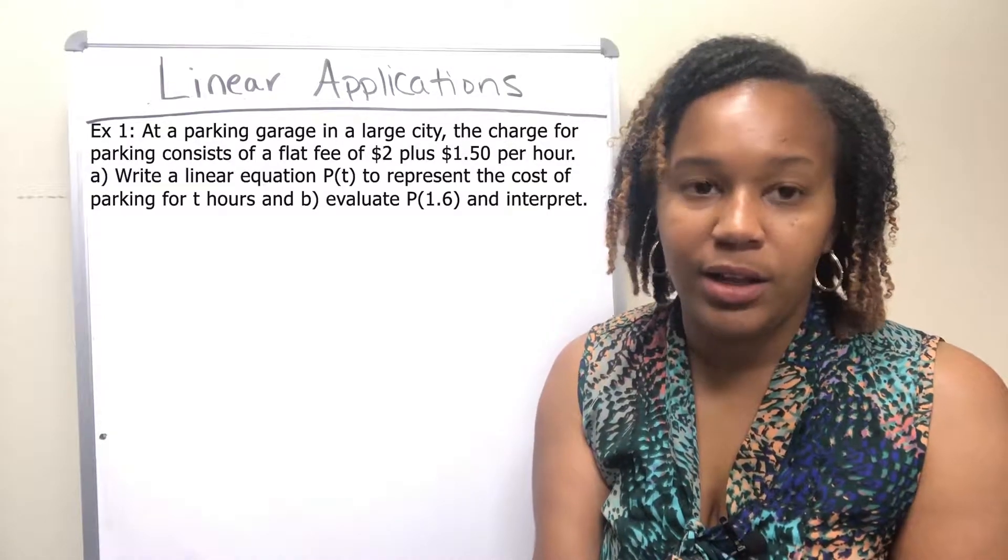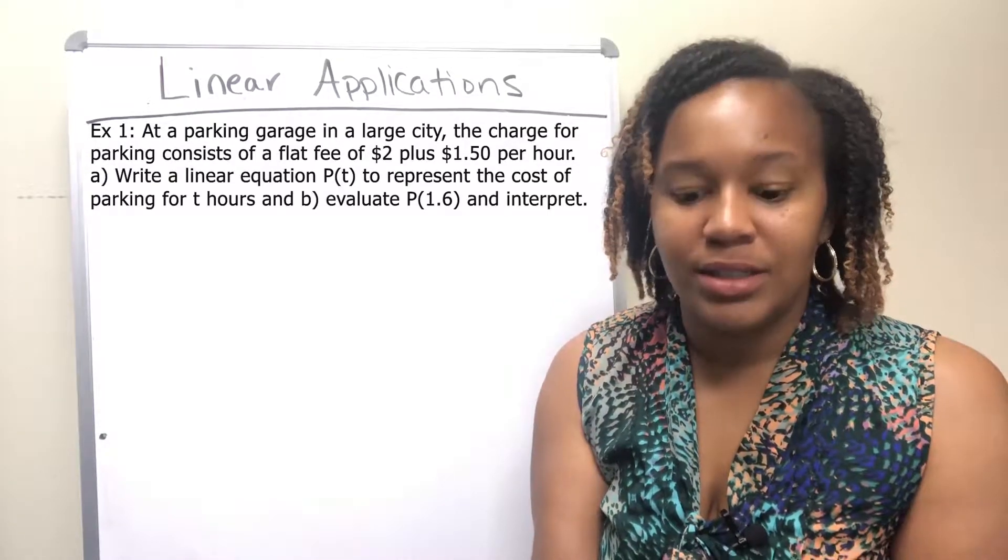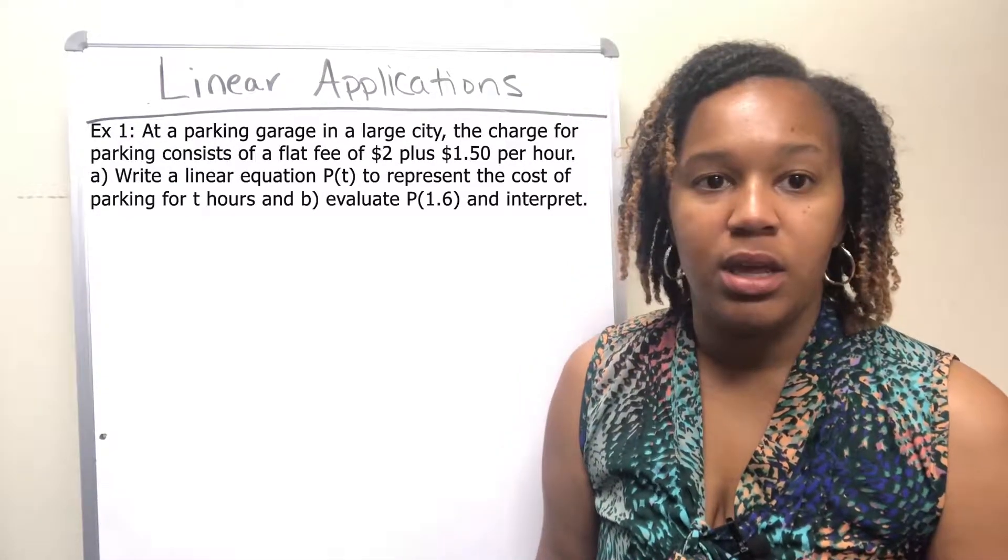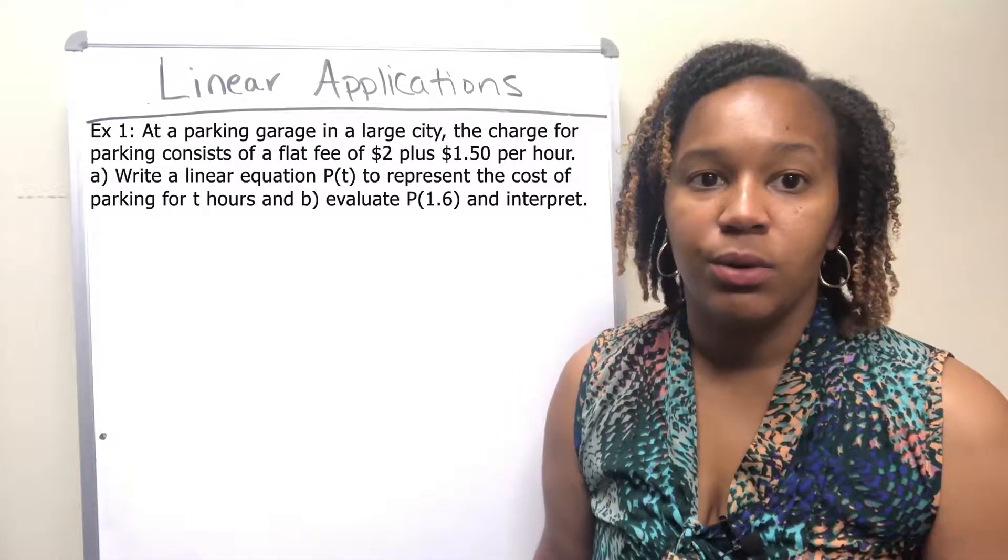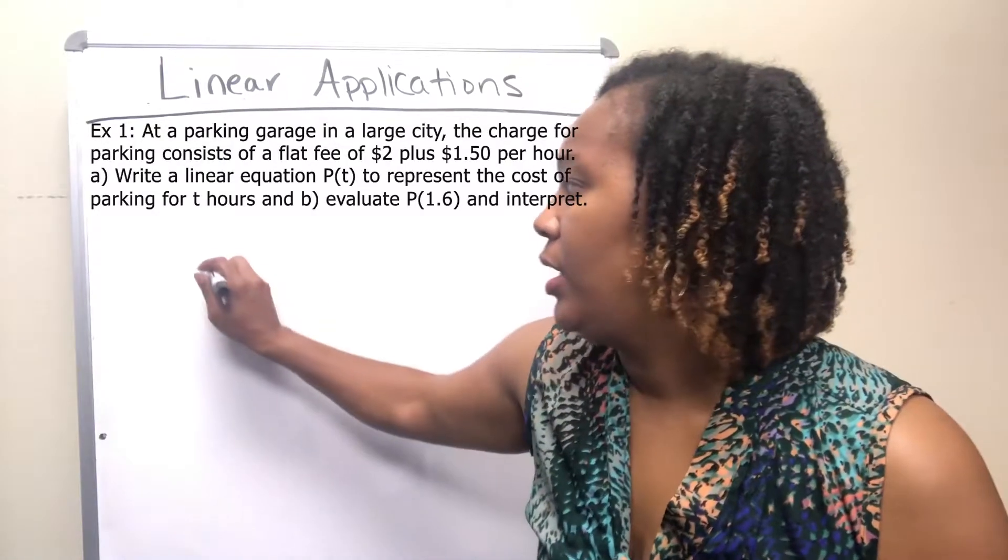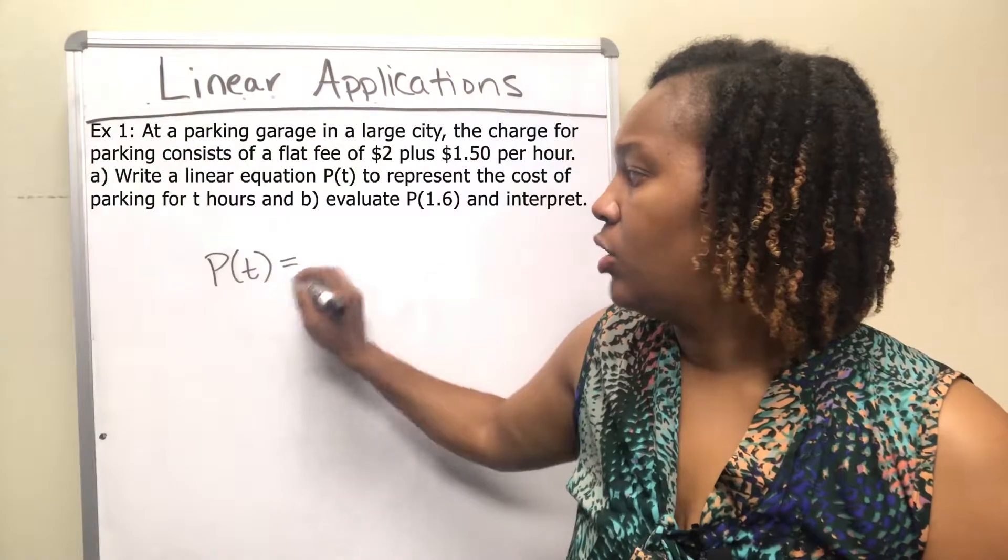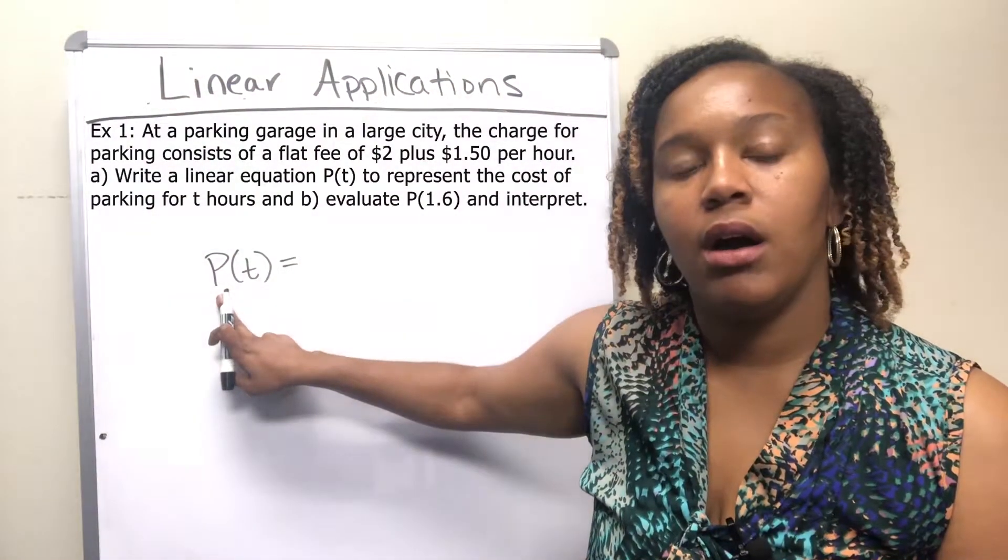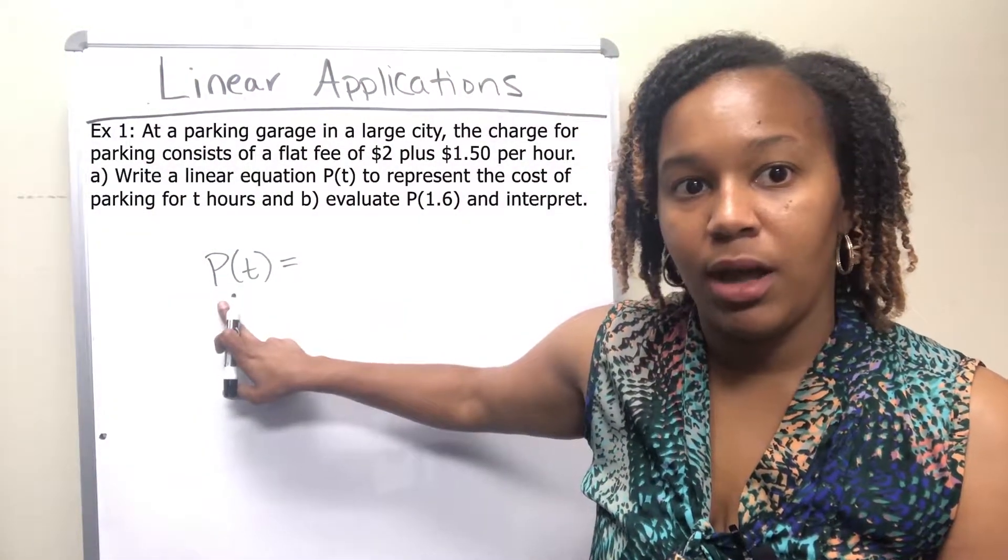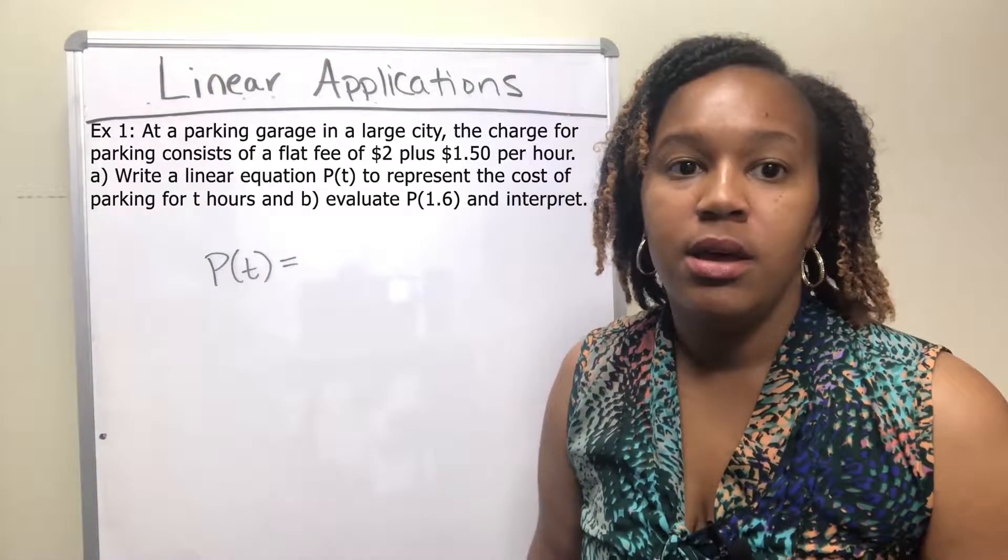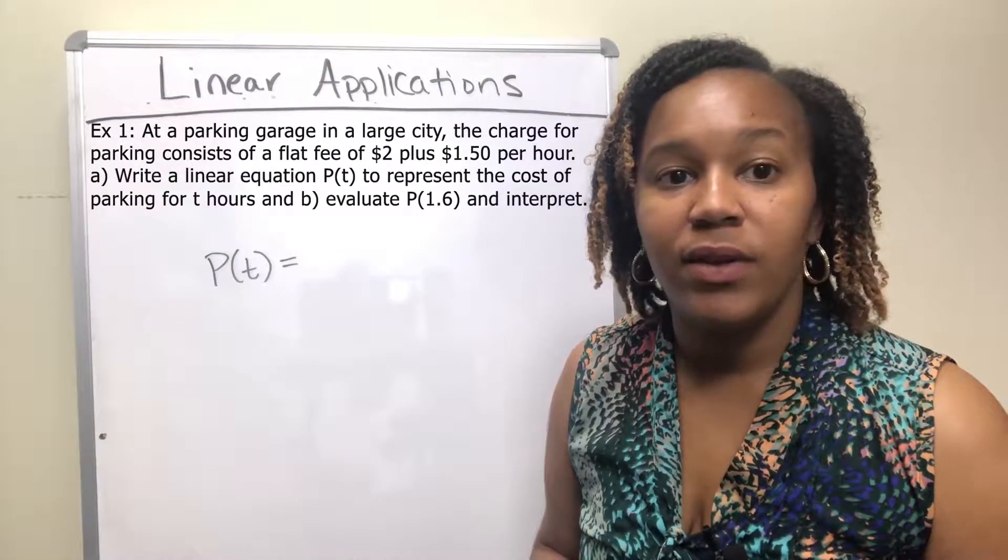We want to write a linear equation to model this situation, and we also want to evaluate it at p of 1.6. So we want to write a linear equation of the form p of t. p is going to represent the price for parking, the parking cost, and t is going to represent the time in hours that you spend.